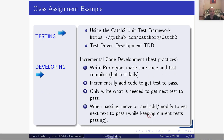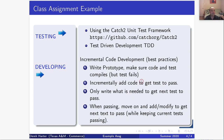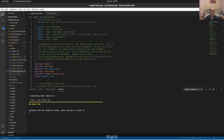If the return value matches, you pass the test; if not, you don't. I'm teaching you a style of programming known as test-driven development. It's an incremental code development approach: you write a prototype just to make sure the code and the test compile, but initially your tests will be failing. Then you incrementally add code to get a test to pass, and once one test is passing you move on to the next. You try to write very small chunks — only what's needed to get the next test to pass.